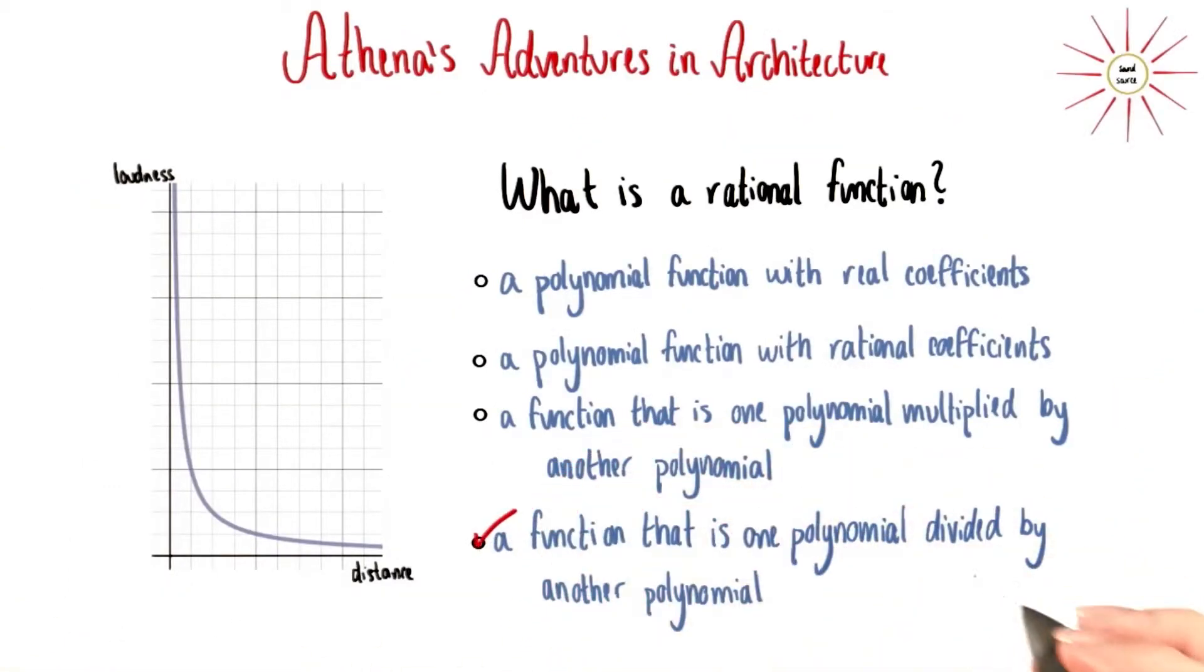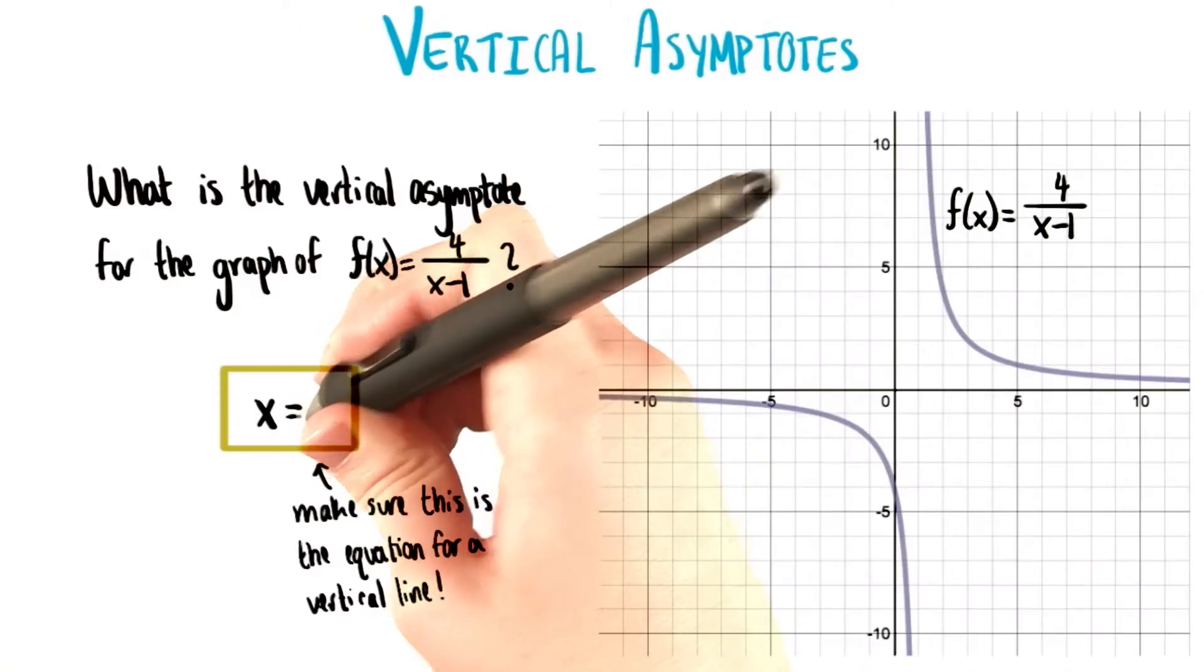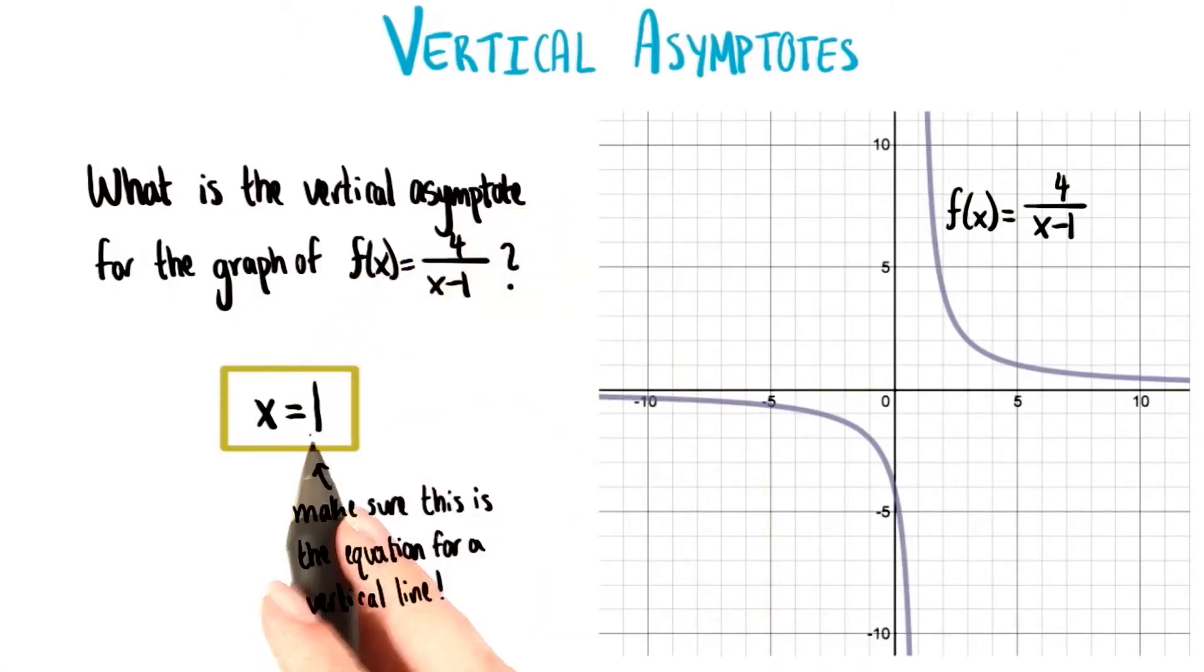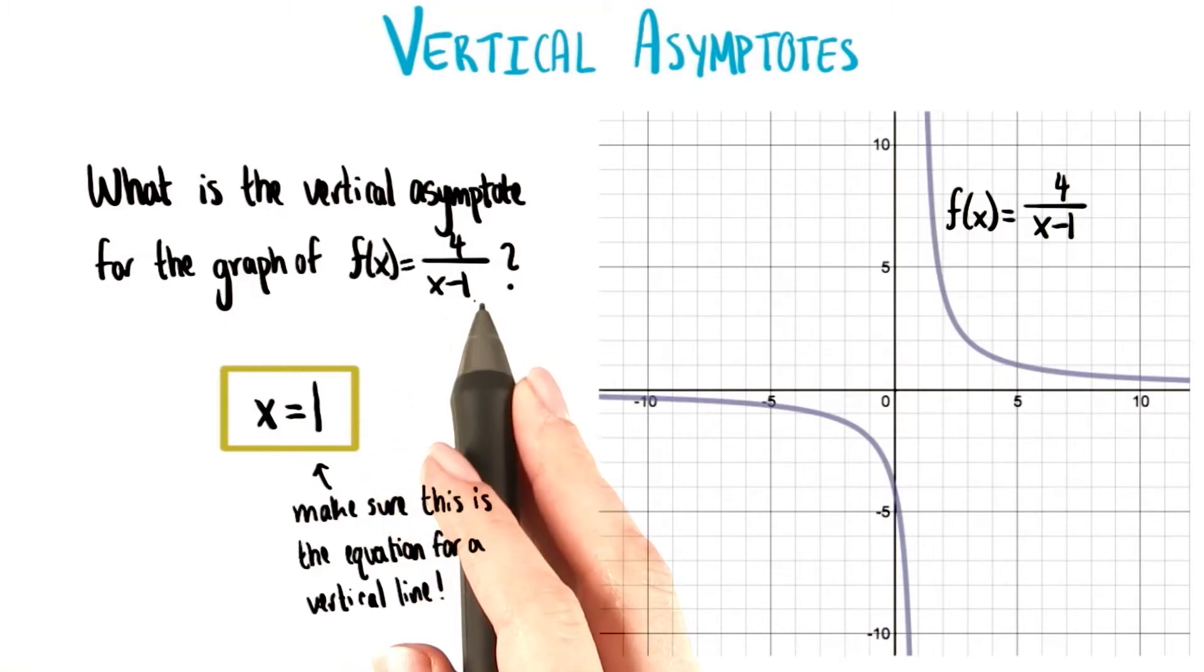This prepared us to work with rational functions, whose vertical, horizontal, and slant asymptotes restrict their domains and ranges in particular ways.